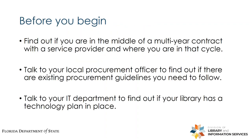Before you begin, my recommendation is to consider some things before you start the process. First, talk to your local procurement office and find out if there are local procedures you would need to follow. Throughout the process you have to satisfy both your local policy and the federal guidelines, and if there's ever a conflict between the two, you always have to follow the most stringent requirement. Also talk to your local IT folks and figure out if there is a technology plan in place for your library — it's not required by USAC, but knowing what you're working towards locally can be great when writing your request for bids.